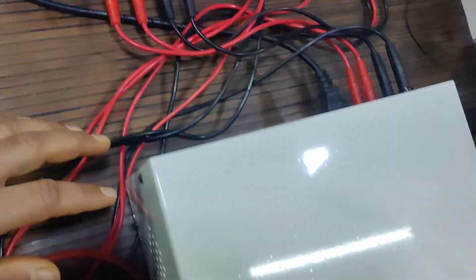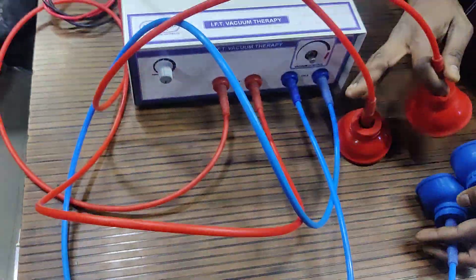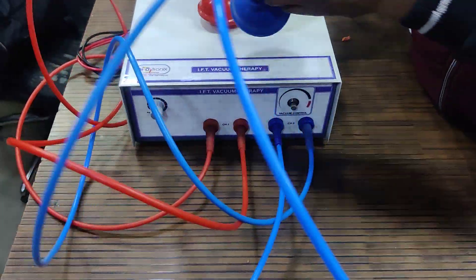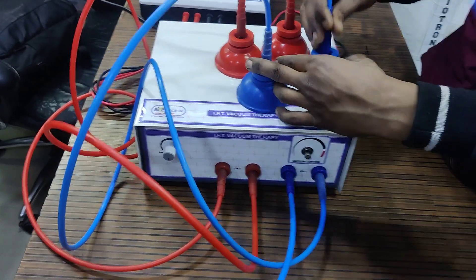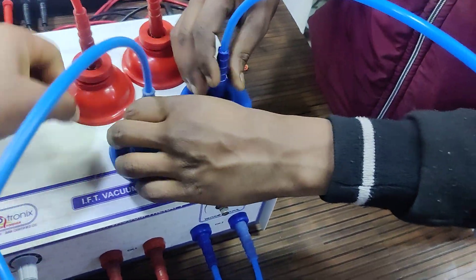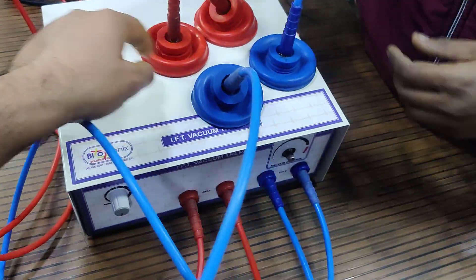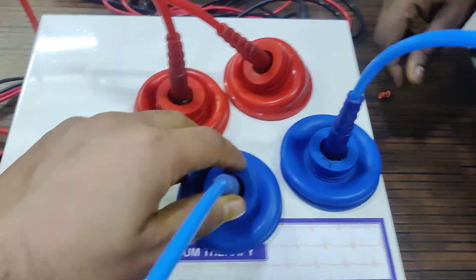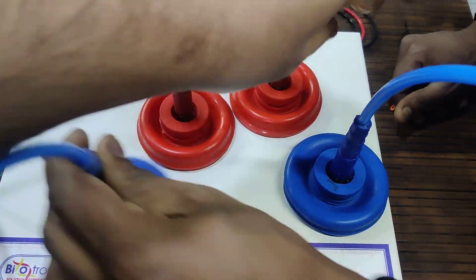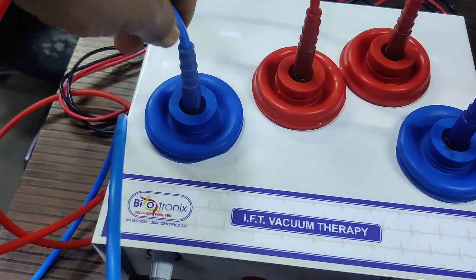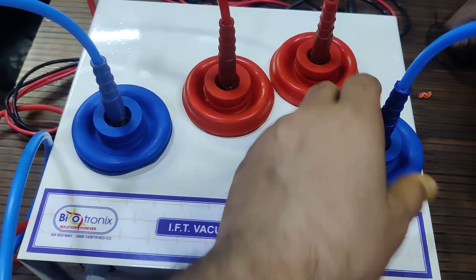Now I'm showing you the demo of the same. These are the four electrodes, vacuum electrodes. When I place them, you can see the vacuum. You can see that because of the vacuum, they have stuck to the surface.